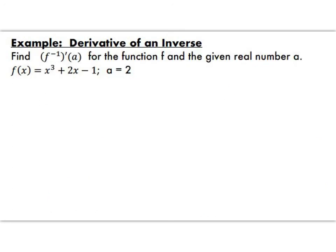Here we go again. Another chance to do this. Find f inverse prime of a for the function f and the given real number a. Well, a is 2. Once again, we're going to do our first step here. Our first step involves taking the 2 and setting it equal to x cubed plus 2x minus 1. Take this number, set it equal to your function, because we need to find out what the x value is for that particular function.